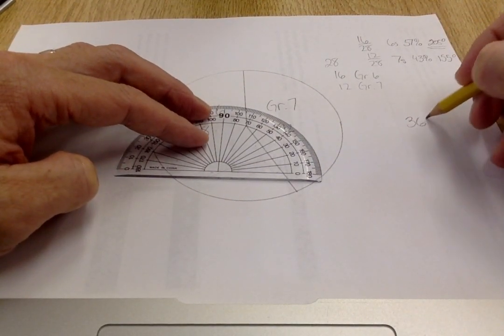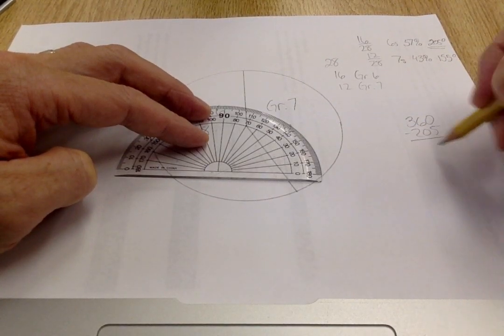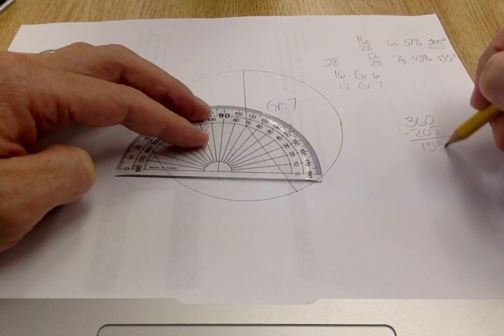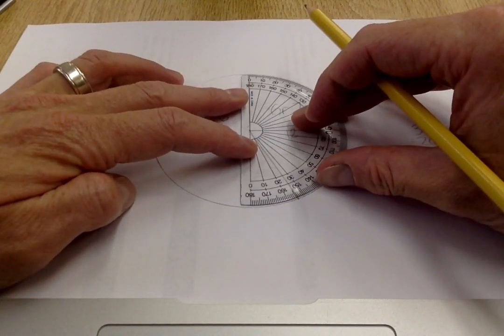You can either do 360 minus 205, which is going to give you 155, and you're going to measure this angle out instead, which is what we did over here.